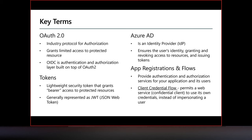Azure Active Directory supports the OIDC protocol on top of OAuth. JWT tokens — JSON Web Tokens — are the industry standard for exchanging authentication and authorization information. These are lightweight security tokens; the client presents a bearer token to the server to prove itself and access the resource. Azure Active Directory acts as the identity provider, controlling and managing user identity, permissions, and resource access.